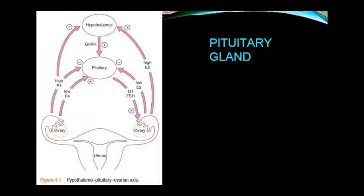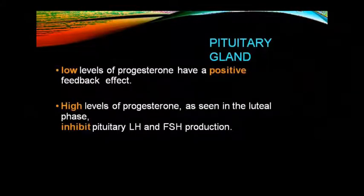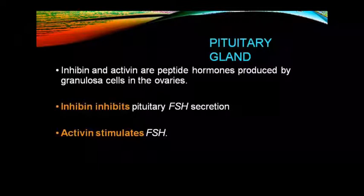High estradiol has a stimulatory effect on the hypothalamus. Low-level estrogen has an inhibitory effect on LH production at the pituitary — that is, it acts as negative feedback. High-level estrogen increases LH production — positive feedback. Low-level progesterone shows positive feedback, while high-level progesterone inhibits LH and FSH production at the pituitary. Inhibin and activin are two peptide hormones produced by granulosa cells of the ovaries: inhibin inhibits FSH secretion from the pituitary, while activin stimulates FSH.